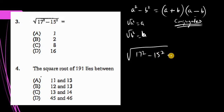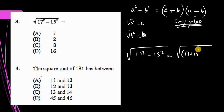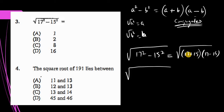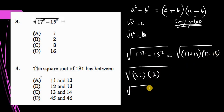So we can apply this to 17 squared minus 15 squared, where 17 is a and 15 is b. In brackets we have (17 + 15) multiplied by (17 − 15). 17 plus 15 is 32, and 17 minus 15 is 2. 32 times 2: two 2's are 4, two 3's are 6, giving us 64.